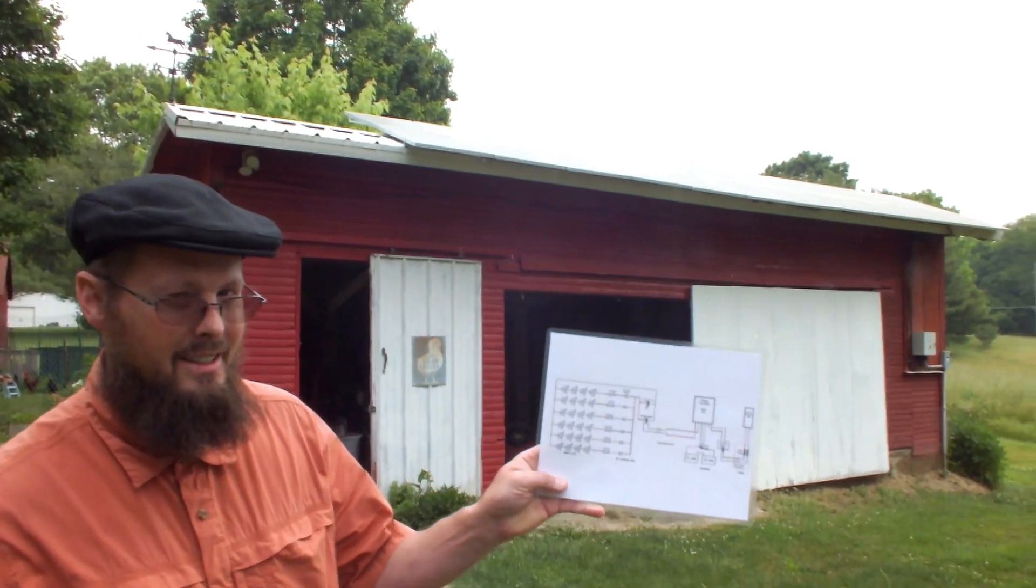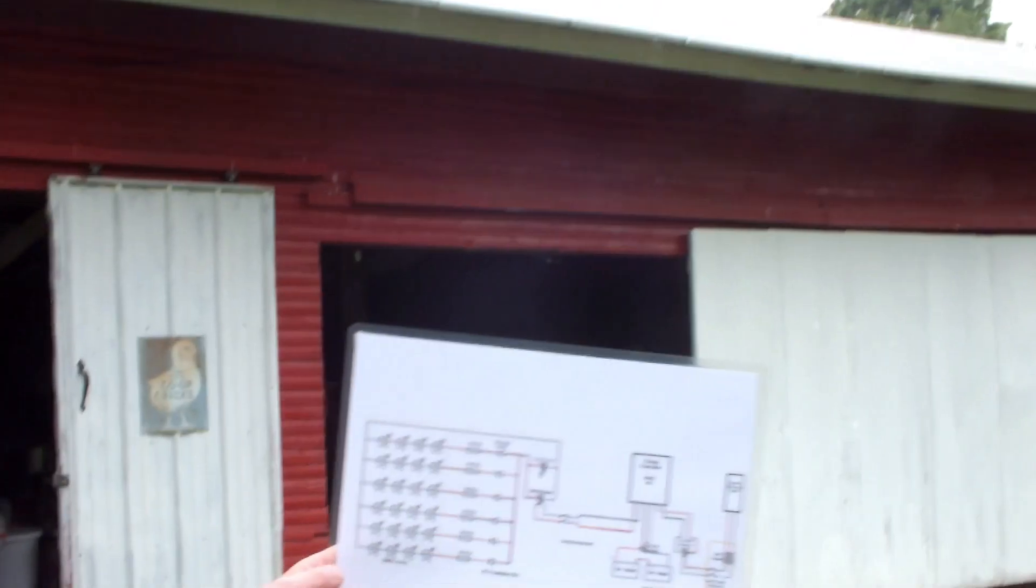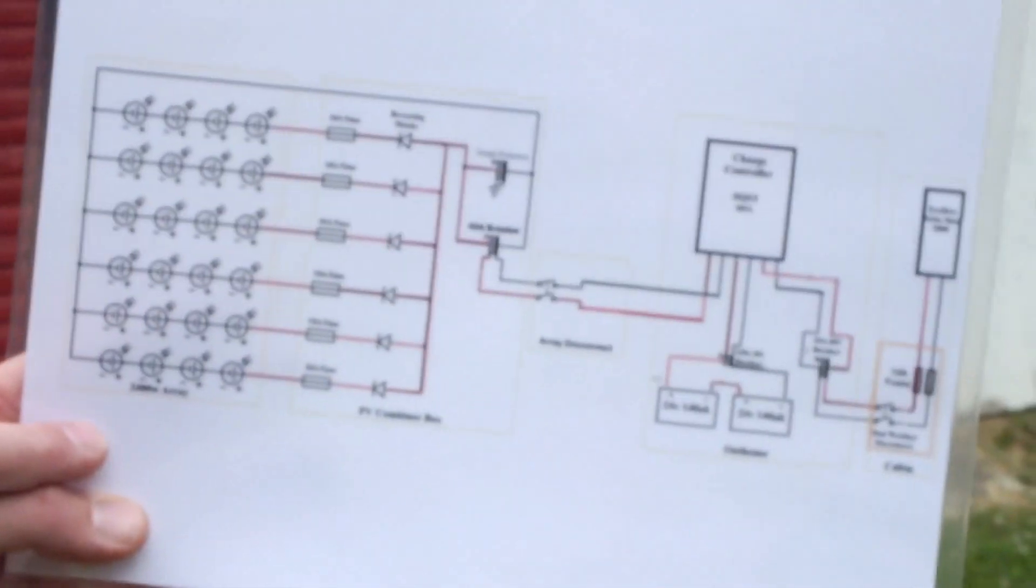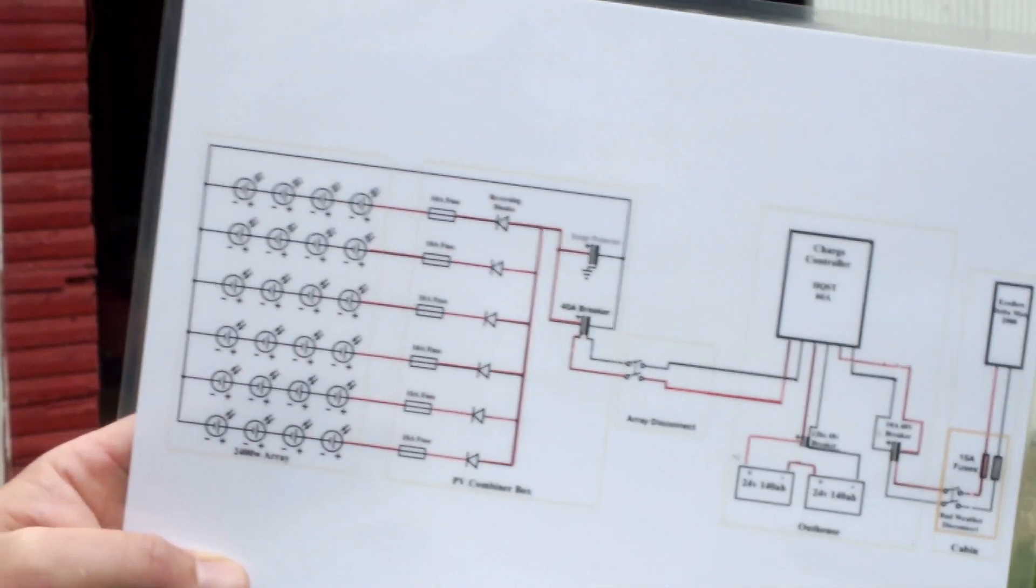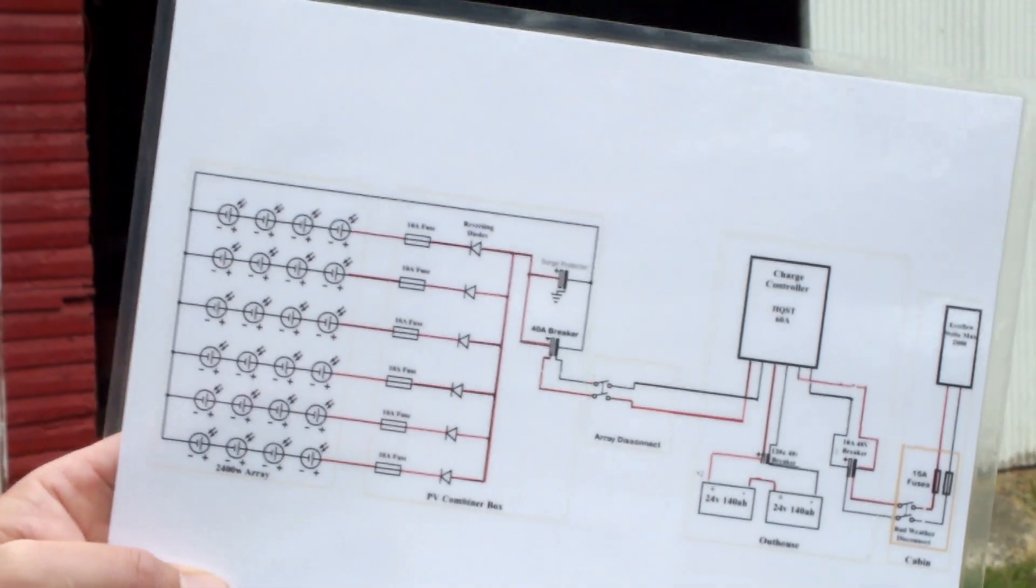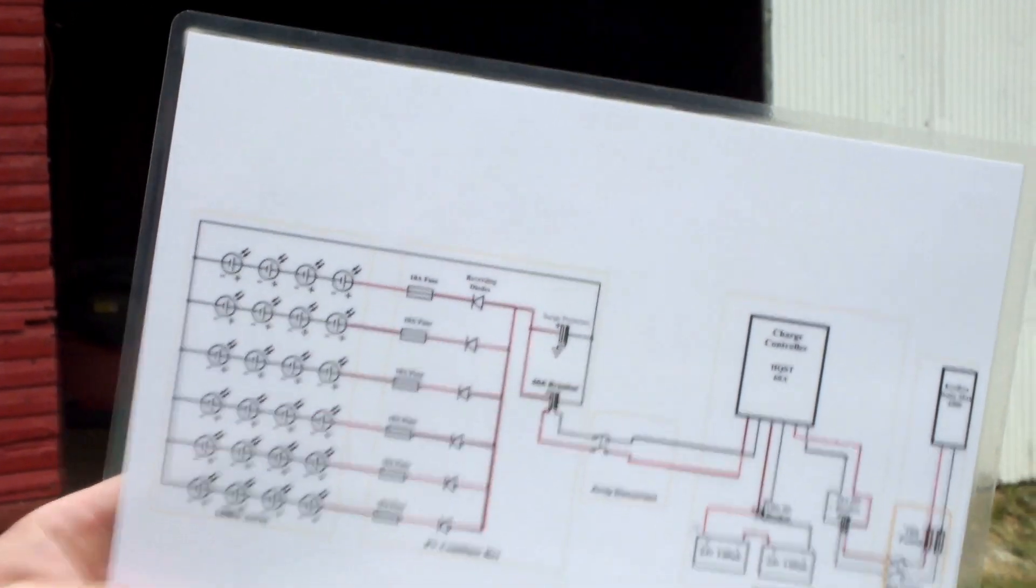If you look here on the array, we have them wired four series, six parallel, giving us an 83 volt 30 amp service. Well, 33 amp. Something to note on the fuses.